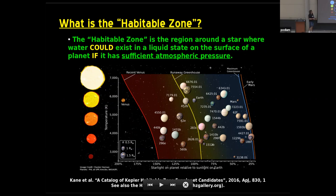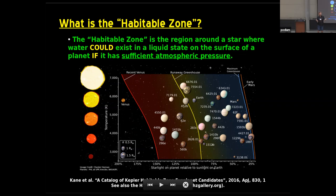We've seen various evolutions of the habitable zone, often shown in a diagram where you have some dependence on the stellar temperature. This is not the distance from the star — it's the percentage of sunlight relative to Earth, so 100%, and you'll find Earth right here. The boundaries then become defined not just by that, but also by empirical boundaries we've observed from our solar system — specifically Venus and Mars.